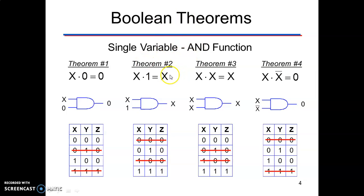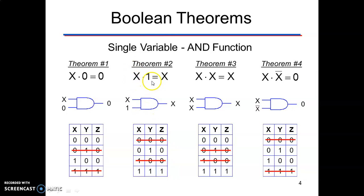Let us now see various Boolean theorems in detail. Using the AND function: x·0 = 0 — this is logical multiplication. x can assume any value 0 or 1; 0·0 = 0 and 1·0 = 0, so any variable logically multiplied with 0 results in 0. x·1 = x: 0·1 = 0 and 1·1 = 1, so any variable multiplied with 1 results in the same variable. x·x = x: 0·0 = 0 and 1·1 = 1. x·x̄ = 0: 0·1 = 0 and 1·0 = 0, so any variable multiplied by its complement results in 0.